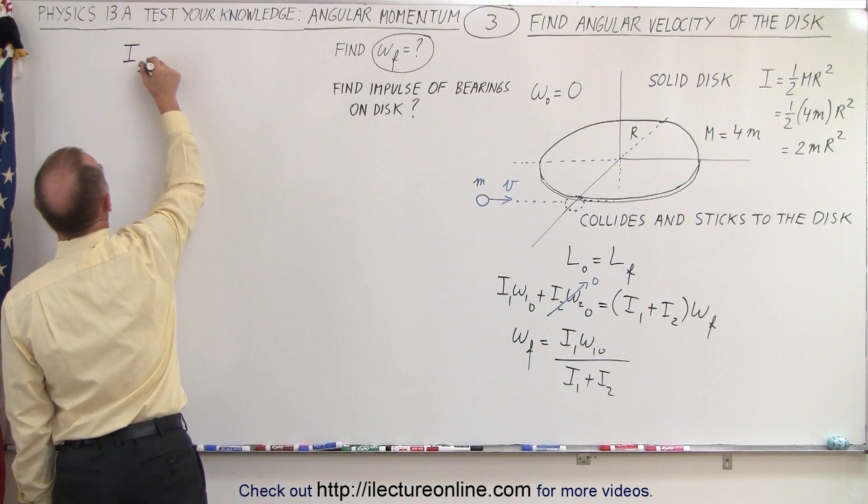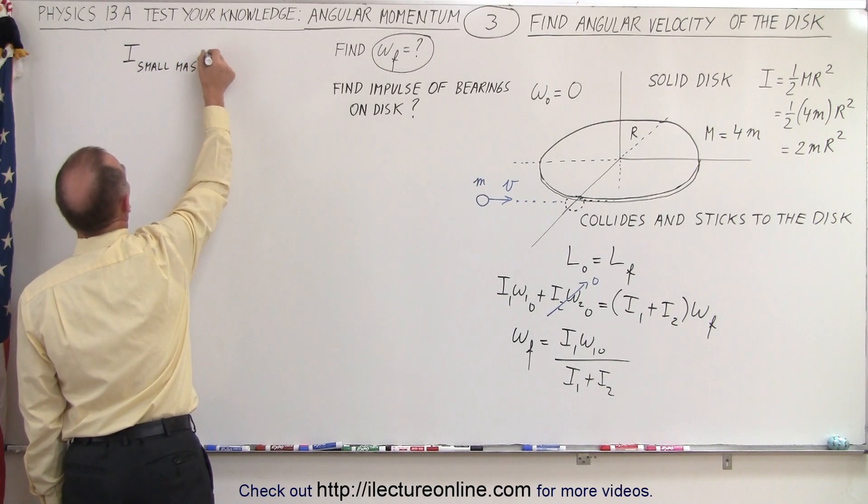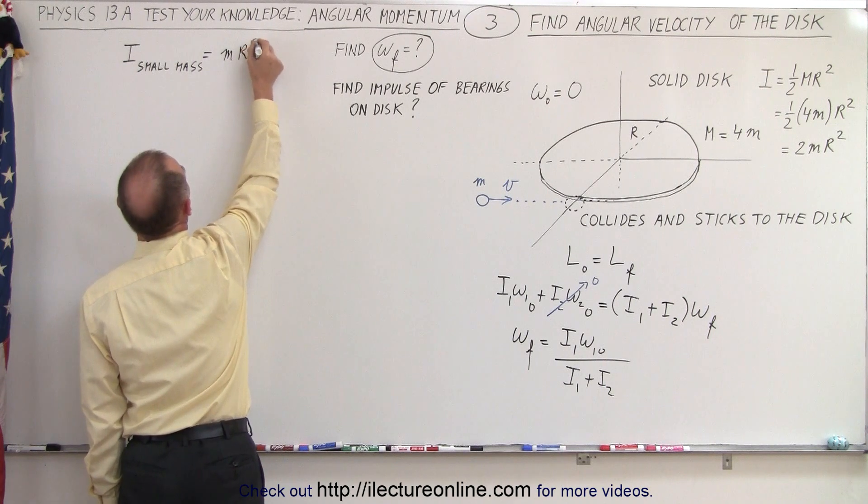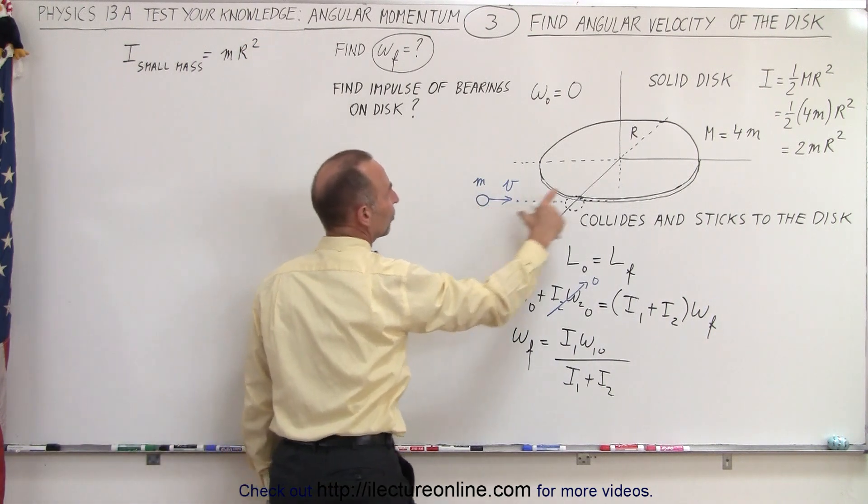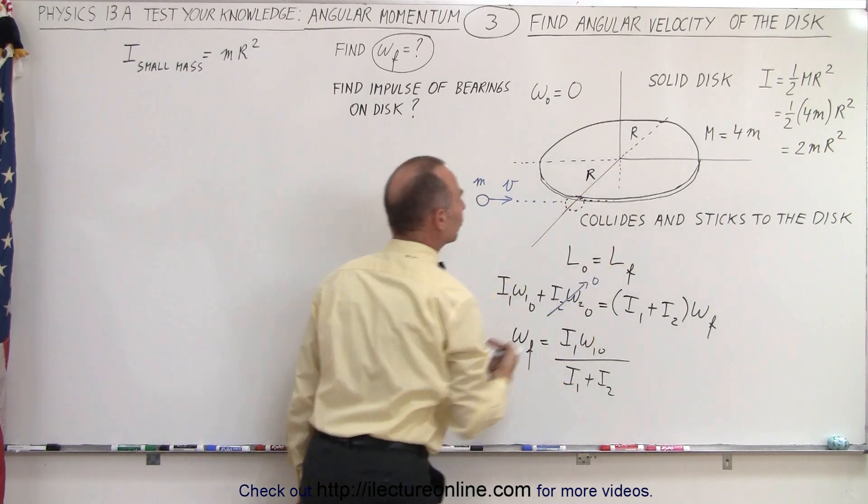So I for the small mass would be mr² because all the mass is at a distance r away from the center of rotation.